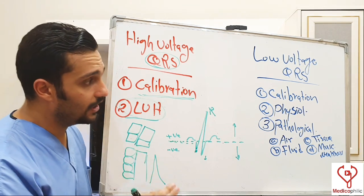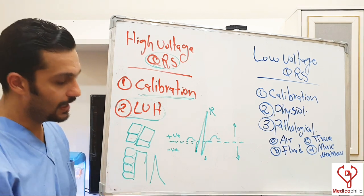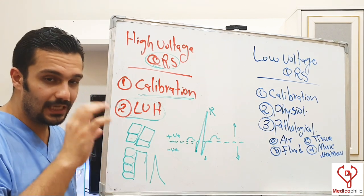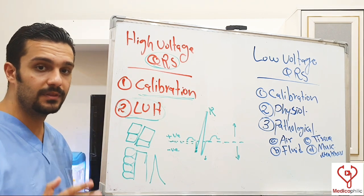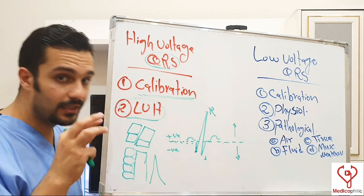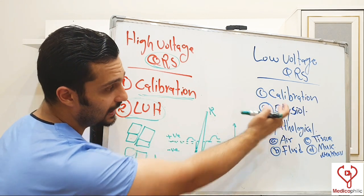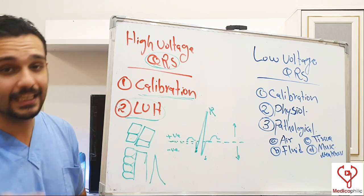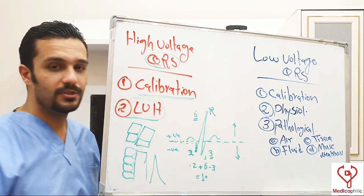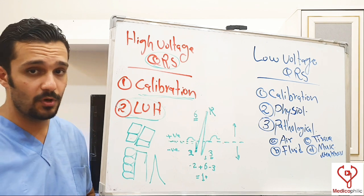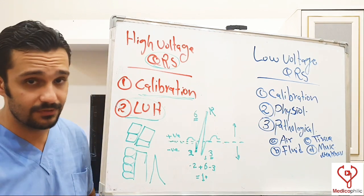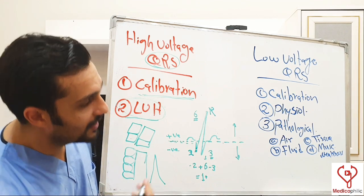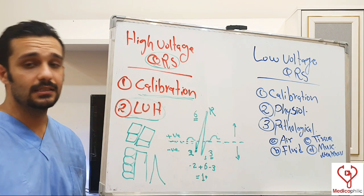Coming to low voltage QRS: we should also pay attention to calibration. If the calibration was smaller than the standard measurement, every wave in the ECG will look short and low voltage — this is one of the major mistakes that can lead to wrong management. If calibration is on the standard measurement, low voltage QRS may be due to physiological causes, for example in a fatty person where soft tissue between the electrodes and the heart is thicker. In pathological causes: if there is air between the heart and electrodes — for example in emphysema or pneumothorax — or fluid such as pleural effusion or pericardial effusion, or heart failure. In tissue causes, for example restrictive cardiomyopathy, there is tissue between the heart and the electrodes. And in muscular weakness of the myocardium, for example dilated cardiomyopathy.